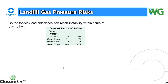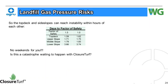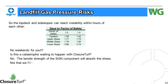The top deck and side slopes can reach instability within hours of each other — top deck versus upper slope and middle slope are just a few hours apart, meaning basically no weekends off. Is this a catastrophe waiting to happen with Closure Turf? No. The tensile strength of the Super Grip Net component will absorb that stress, though calculating and relying on that is not recommended.